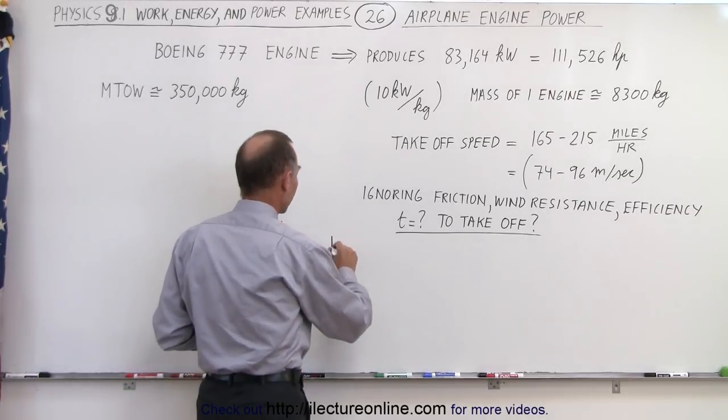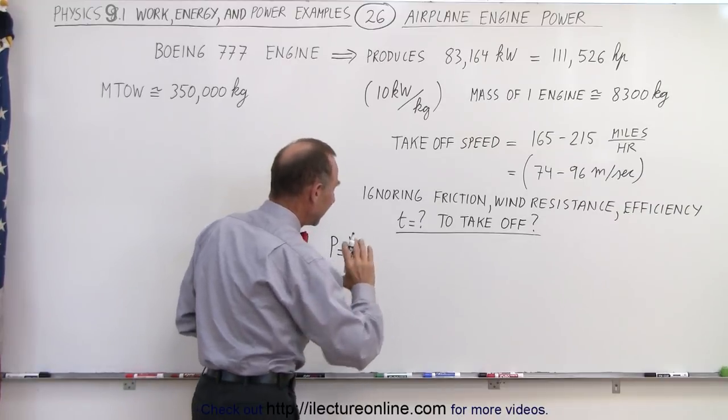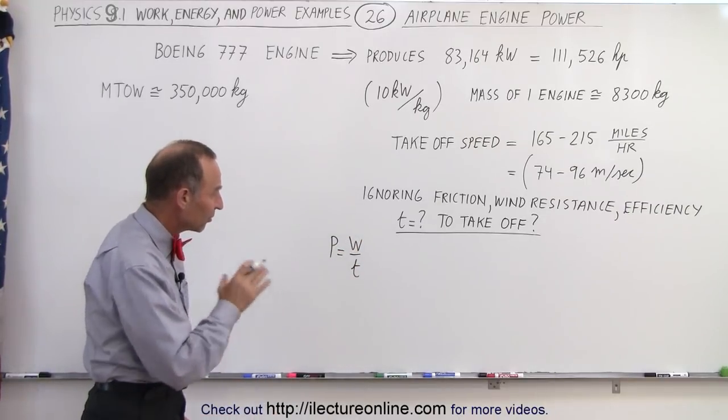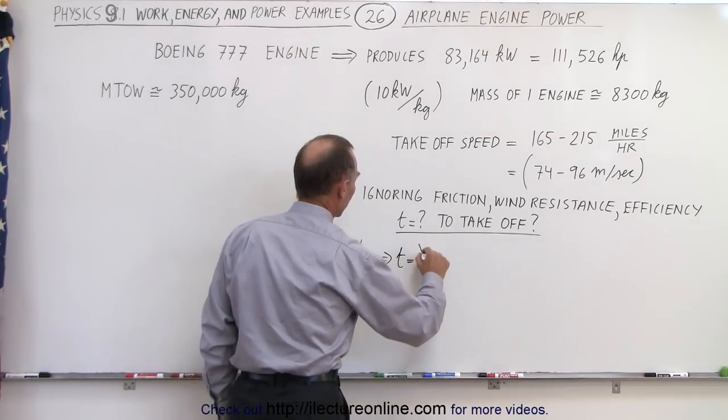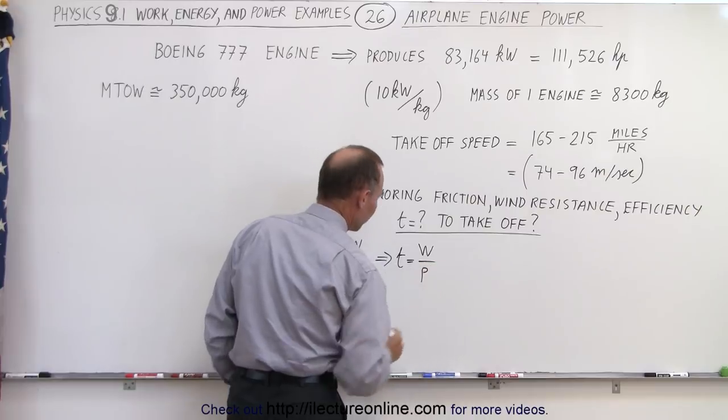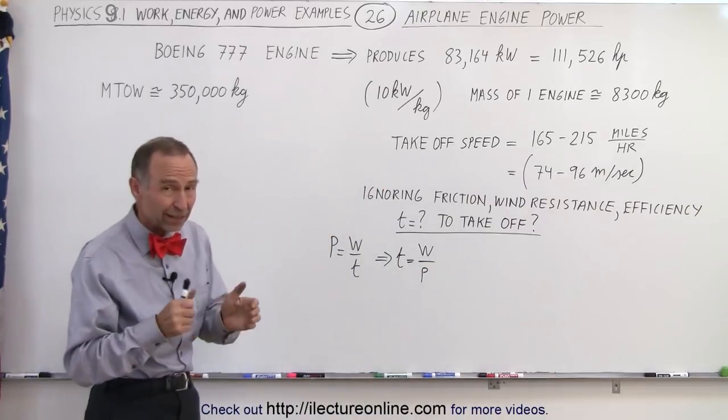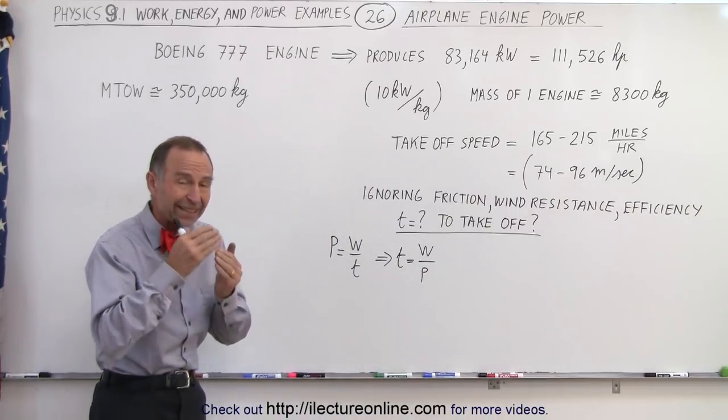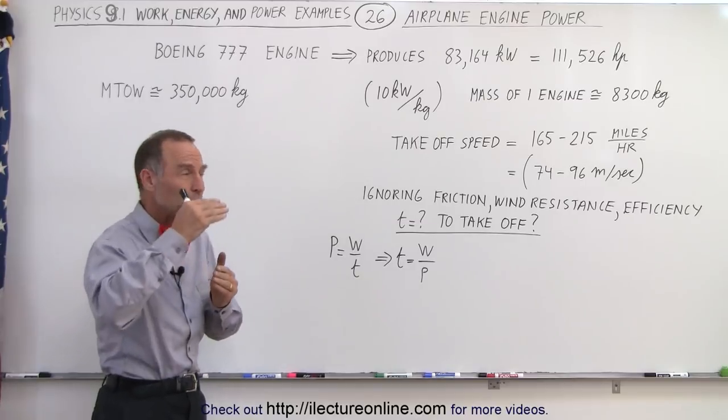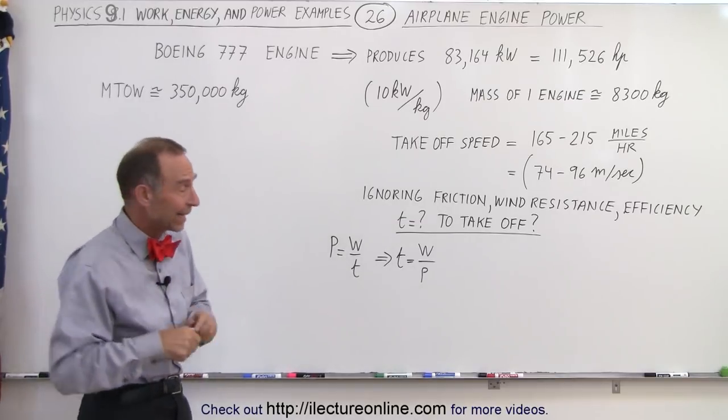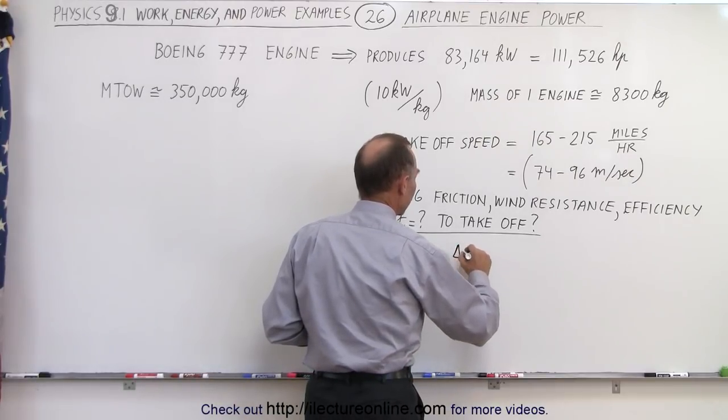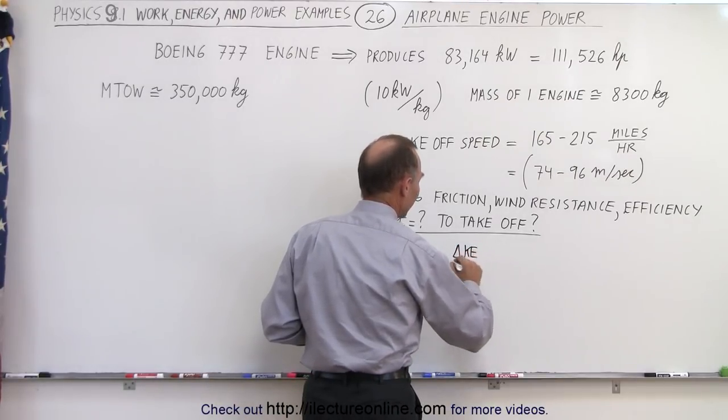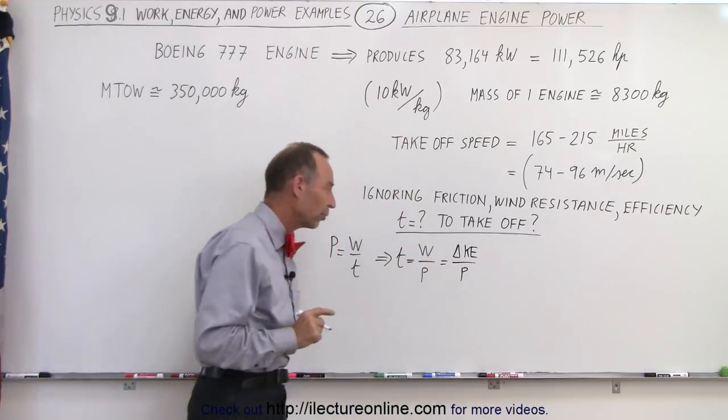So first of all, we know that the definition of power is equal to work divided by time. In this case, what we want to do is calculate the time, so we're going to write this that time is equal to the work divided by the power. So what we're going to do is calculate the work required to get the airplane up to takeoff speed, which means it's trying to gain kinetic energy. That means that this is equal to the increase in the kinetic energy divided by the power produced by the two engines.